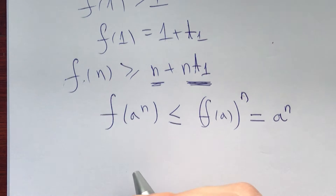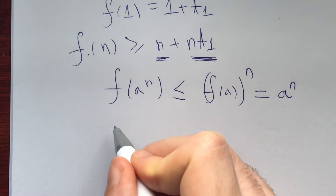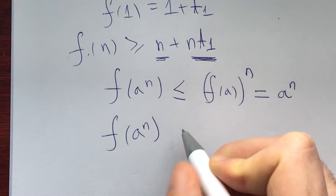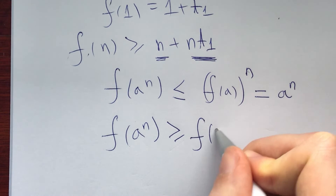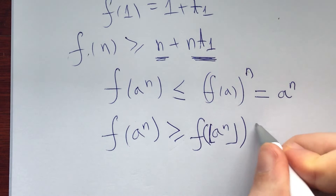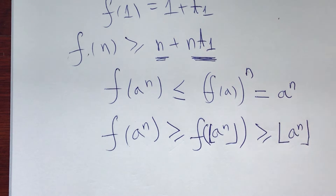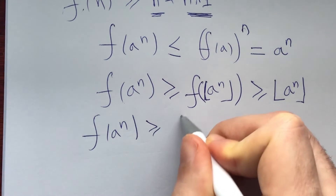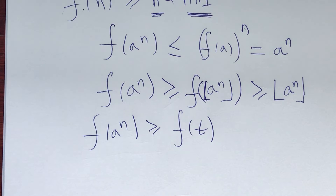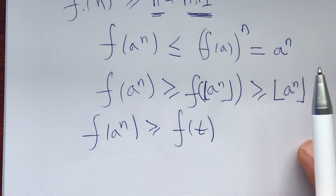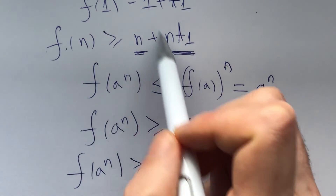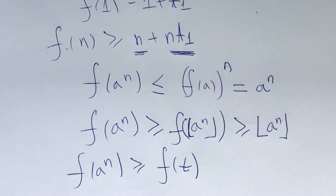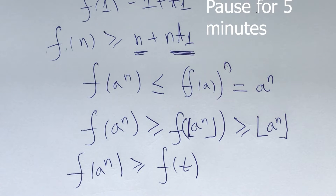Also, because f is strictly increasing, f(a^n) ≥ f(⌊a^n⌋) ≥ ⌊a^n⌋. More usefully, if a^n > t then f(a^n) > f(t). Notice how f(a^n) is bounded above by a^n, yet the lower bound from integers grows without bound if f(1) ≠ 1. I invite you to pause for five minutes and try to put these ideas together.